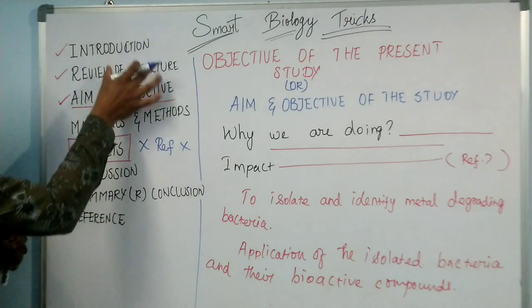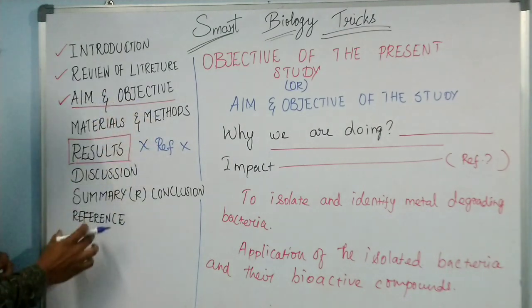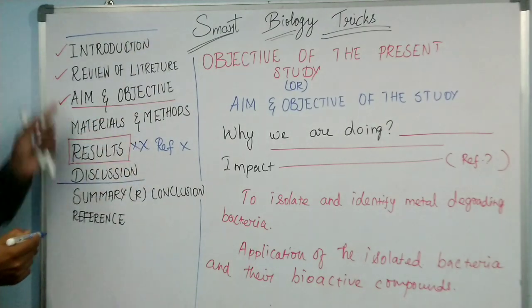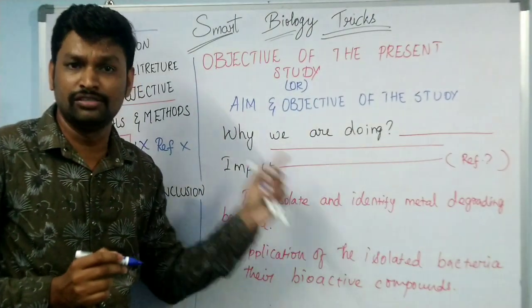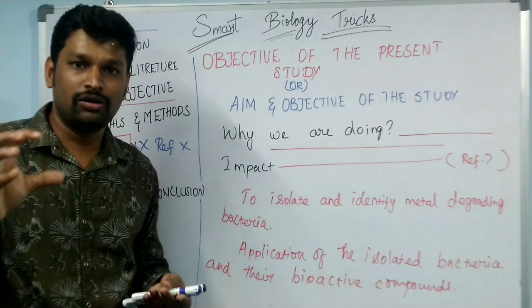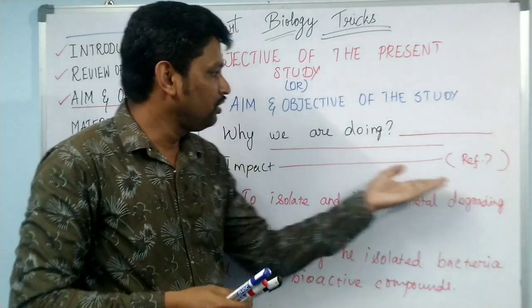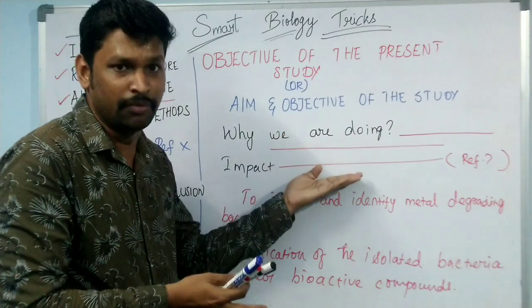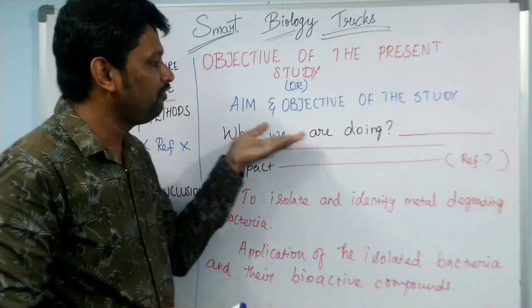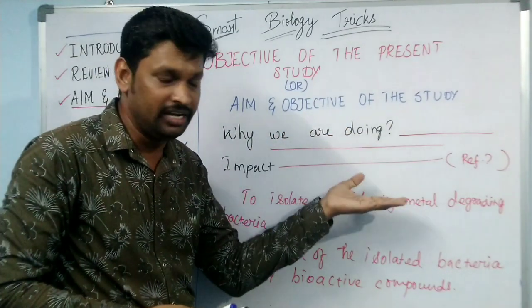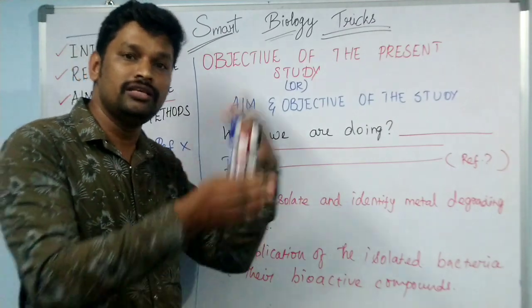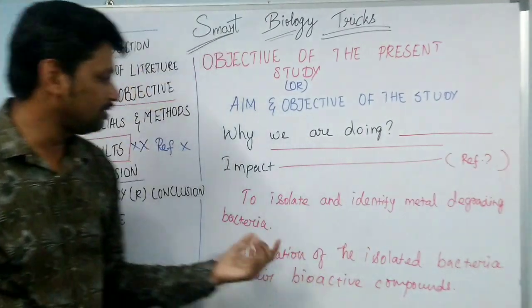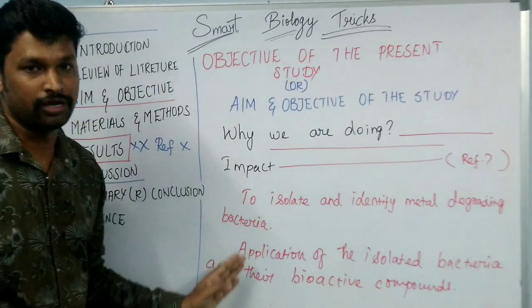Other than the result section — introduction, review, aim and objective, materials and methods, discussion — in all these sections except results, every sentence or point should have a reference. So for the objective, start one paragraph and connect the objective with your statement. Especially explain why we have to do particular research, why we have to collect samples from the site, and what is the gap between already existing research and your aim and objective. You should mention one reference, followed by stating your objectives in the study.